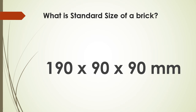What is the standard size of a brick? This is the clay brick. The standard size of a clay brick is 190 × 90 × 90 mm. These days we are getting fly ash bricks and CLC blocks of different sizes, but the standard size of a clay brick is always 190 × 90 × 90 mm.